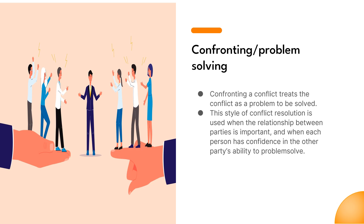Example 1: Team member disagreement. Imagine a software development project where two team members have different opinions on the best approach to solving a technical challenge. One believes a certain programming language would be more efficient, while the other prefers a different language. Both have a good working relationship and trust each other's technical expertise. The confronting, problem-solving approach would involve them sitting down to discuss viewpoints, explore pros and cons, collaborate on project requirements, technical feasibility, and their shared goal of delivering a high-quality product, reaching a mutually agreeable solution.